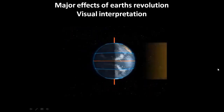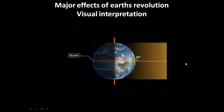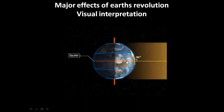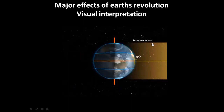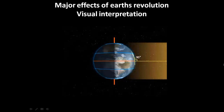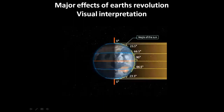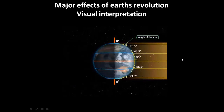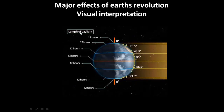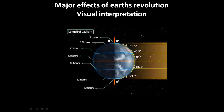Now we will see autumn equinox, 22nd of September. The direct sunlight will fall on the equator at a 90 degree angle. As you can see in this visual, the northern hemisphere will experience autumn equinox and the southern hemisphere will experience spring equinox. You can see the angle of sun rays falling on different latitudes. The length of daylight will be equal — 12 hours of day and 12 hours of night.